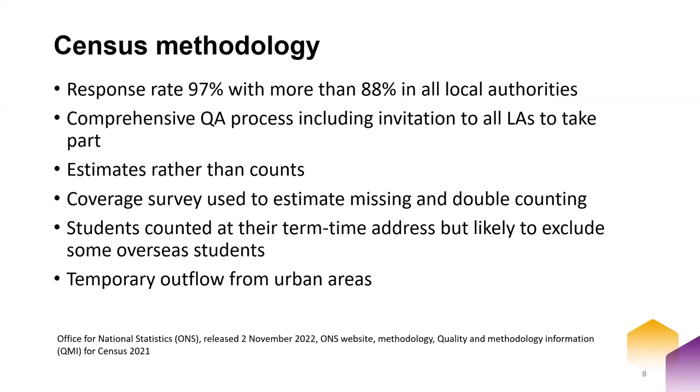We had a response rate of 97% for the 2021 census and more than 88% in all local authorities. Though this is great, it does mean that the numbers are produced as estimates and may have some impact on some of your smaller populations. For example, we know there is significant underrepresentation of the Gypsy and Traveller community, which does cast some concerns about using census data purely as the only method of understanding that community in the local area.